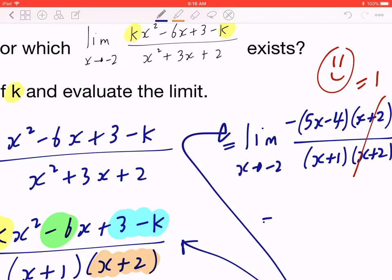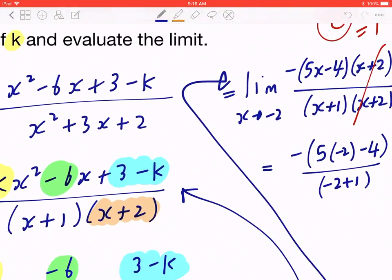Then you go back to step 1, which means you plug in x to be -2. So this equals to negative, open bracket, 5 times -2 minus 4, all over -2 plus 1.